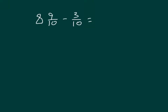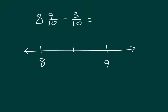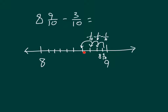Here we have 8 and 9/10ths minus 3/10ths. Let's draw a number line. We'll go in between the whole numbers 8 and 9 and break apart our number line into 10 parts, then mark 8 and 9/10ths. To subtract 3/10ths, we subtract by 10ths: minus a 10th, minus another 10th, and minus another 10th. Counting down, it would be 8 and 8/10ths, 8 and 7/10ths, 8 and 6/10ths.